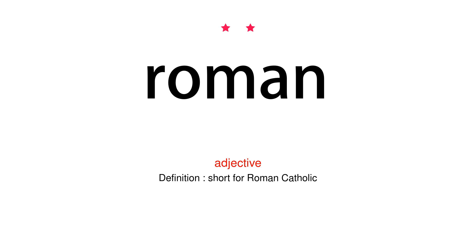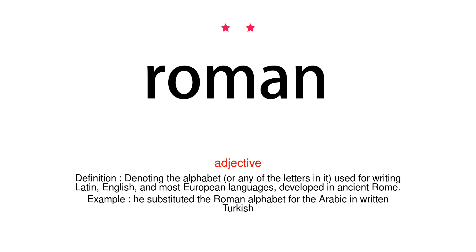Adjective. Definition: Short for Roman Catholic. Adjective. Definition: Denoting the alphabet, or any of the letters in it, used for writing Latin, English, and most European languages, developed in ancient Rome. Example: He substituted the Roman alphabet for the Arabic in written Turkish.